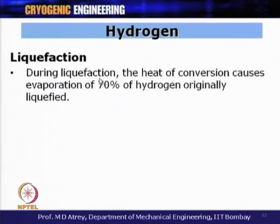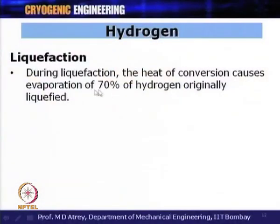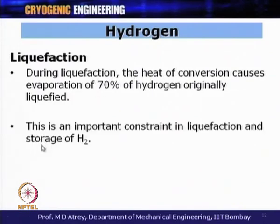During liquefaction, if the ortho-to-para conversion is incomplete, the heat of conversion causes evaporation of up to 70% of the hydrogen originally liquefied. As temperature decreases during liquefaction, the exothermic conversion releases heat that evaporates whatever liquid has formed. This is a very important constraint in the liquefaction and storage of hydrogen.